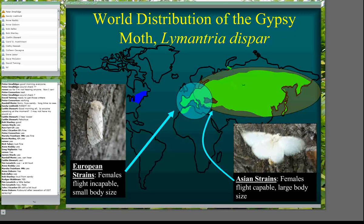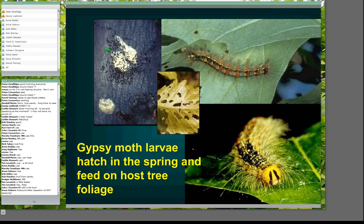Moving ahead with the life history: gypsy moths mate in mid to late summer. Right after mating, the female lays all of her eggs in a single mass covered with spiny hairs. Usually the egg masses are laid on the trunk of the tree, but they can be on branches or objects on the ground. They spend the entire winter in the egg stage, and then in the spring the eggs hatch — anywhere from about 300 to 800 eggs per mass, giving them a very good capability for population growth because of this large fecundity.